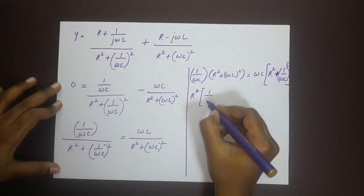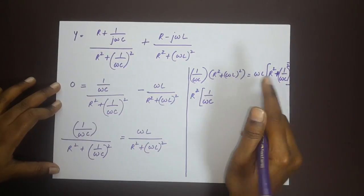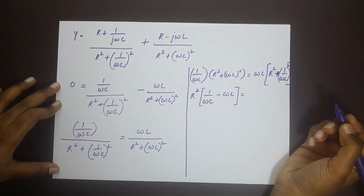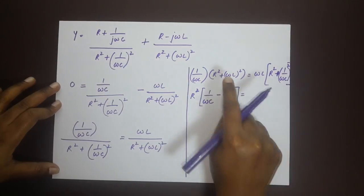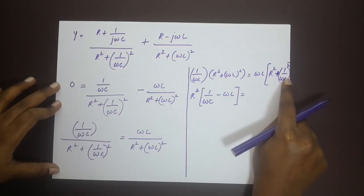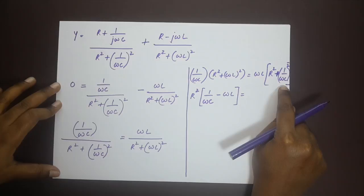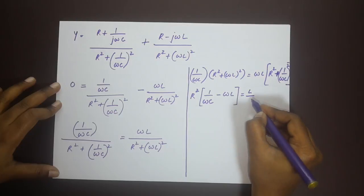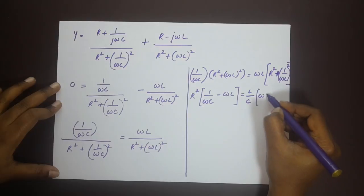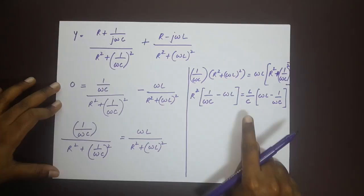If I multiply 1 by ωc with ωL whole square and here ωL with 1 by ωc whole square, you will see the term L by c common. If we take L by c common we will have ωL minus 1 by ωc.